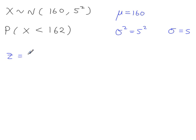Using the standardizing formula, z equals x minus the mean over sigma. If we substitute these values, we have x which is 162 minus the mean 160, divided by the standard deviation 5.